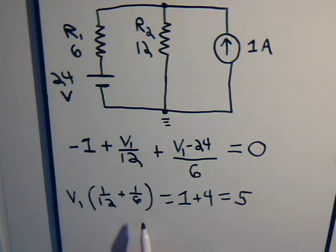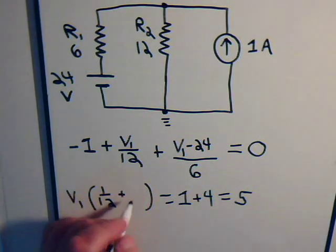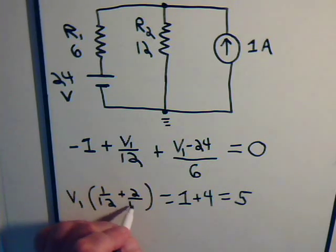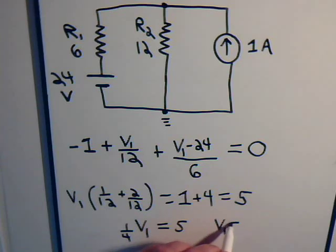And we have this equation, and 1 sixth, that's the same as 2 twelves. So, here we have 3 twelves, or that's 1 fourth, so 1 fourth times V1 equals 5, so V1 equals 20 volts.